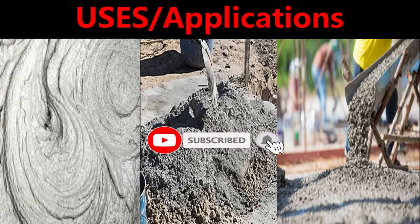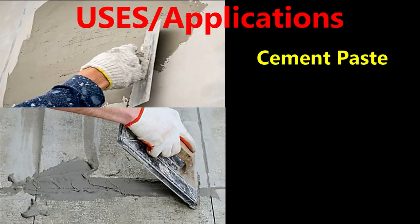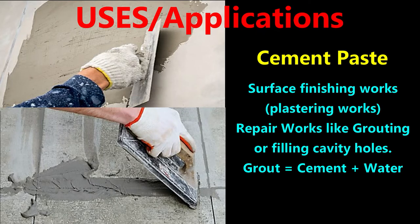Next, the uses of these three materials. Cement paste is used for surface finishing works like plastering for smooth surfacing, and mainly for repair works like grouting or filling cavity holes. For grout, only cement and water is used, so paste can also be called grout in some cases. Grout is a mixture of cement and water.